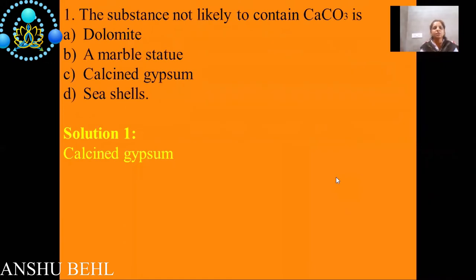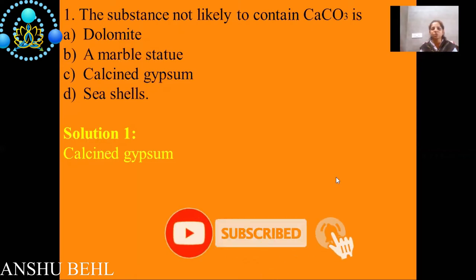First is the substance not likely to contain calcium carbonate: dolomite, a marble statue, calcinite gypsum, or sea shells. One by one we will discuss. Dolomite is a type of calcium carbonate only. Marble statues are also having calcium carbonate.